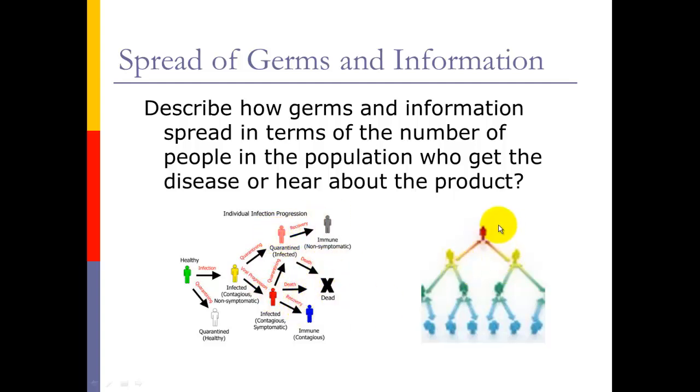Same thing with information. One person experiments with the product, starts telling their friends, and then their friends start telling friends and then those people start telling other people. At the beginning when we have a disease or information, only a few people know about it and it spreads, but it's still within a limited population.